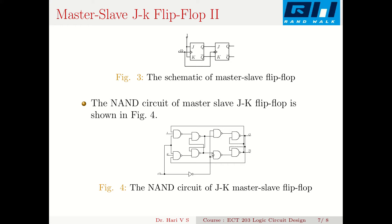The NAND-gate circuit for the master slave flip-flop has the master as a NAND-gate-based JK flip-flop, whose outputs feed into the slave flip-flop. Q is connected to J and Q-bar to K of the slave, making it a delay flip-flop. A positive clock is applied to the master, while the clock is inverted for the slave, so the master is active during the positive half cycle and the slave is active during the negative half cycle only. This ensures only one set of toggling occurs, combating the race around difficulty.